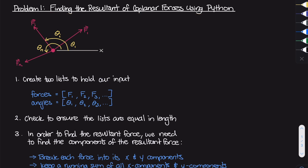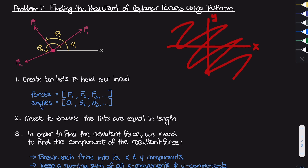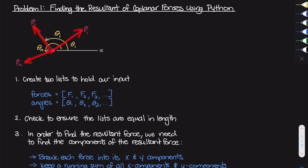What are coplanar forces? Well, if you're used to the traditional Cartesian coordinate system, this Cartesian coordinate system creates a plane. On this plane, we're going to have many different forces — here's F1, here's Fi, here's Fn — and we're only going to be dealing with forces in the two-dimensional space. This problem is asking us: if we had any number of forces on this plane, what is the resultant vector of those coplanar forces?